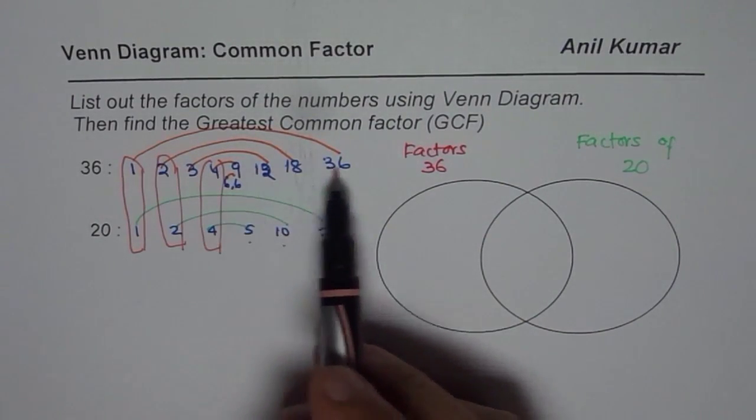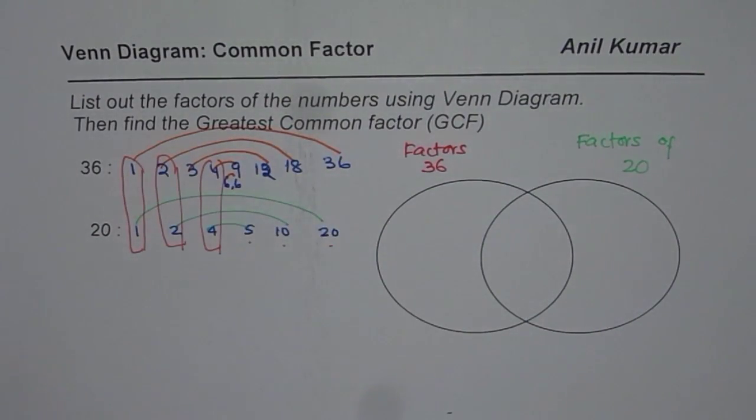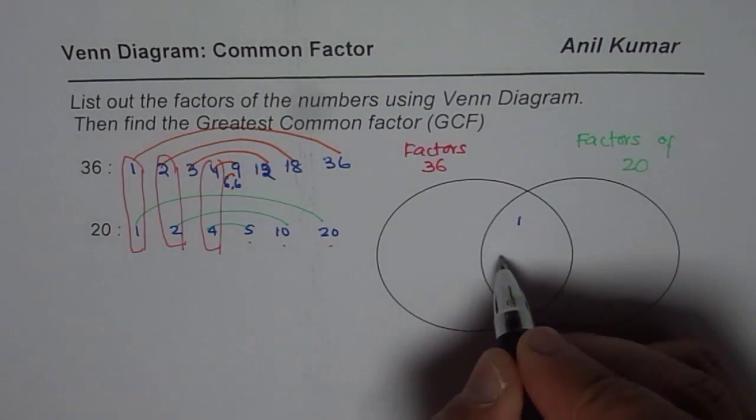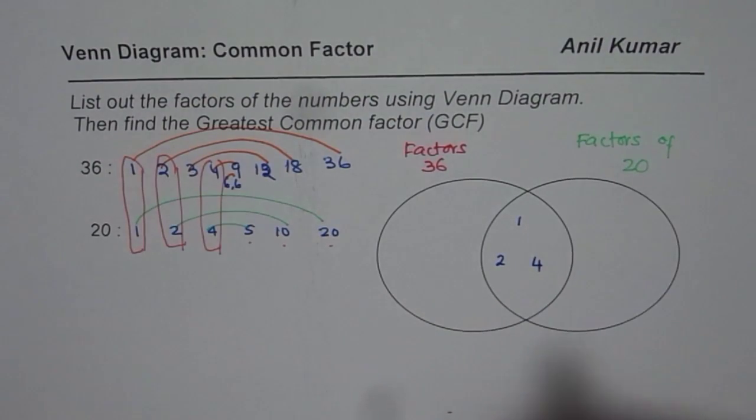So the others are also not common. All these common factors will go in the center part, right? So let me write down the common factors in the center, which are 1, 2, and 4. So we have 1, 2, and 4 right in the center.